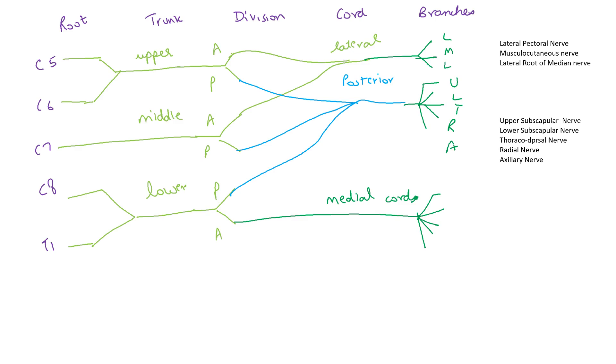Whereas the medial cord gives M for U. So, there are 4Ms, medial pectoral nerve, medial root of median nerve, medial cutaneous nerve of arm, medial cutaneous nerve of forearm and the ulnar nerve.